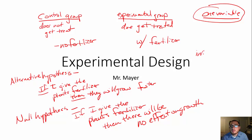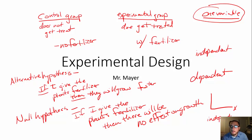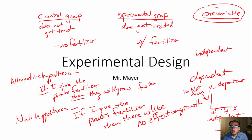You're going to want to know what your independent variable is and what your dependent variable is. I always think about it as setting up a graph. At the bottom on the x-axis, I'm always going to put my independent variable. That's something that I know before I do the experiment. So I know I'll have my group with no fertilizer and my group with fertilizer — I know those before I even start.